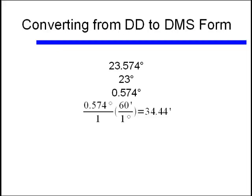And again, we're going to multiply by a conversion factor. But this time, instead of 1 degree divided by 60 minutes, we're going to be using 60 minutes divided by 1 degree. Again, this time we want to end up with minutes as units, so the degrees reduce out of the numerator and the denominator. Doing this, we find that 0.574 degrees is equal to 34.44 minutes.